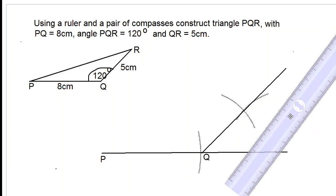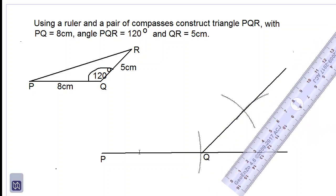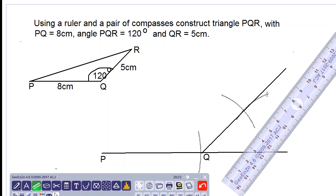The angle at Q would be 120 degrees since the angle over here is 60 degrees. As you can see, we are using dark pencil for the triangle and lighter pencil for the construction arcs.